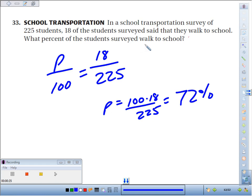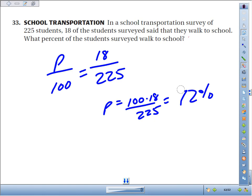What percent of students surveyed said they walked to school? 100 times 18 divided by 225? That seems too high. Only 18 surveyed said they walked, so my percentage shouldn't be that high. Let's try it again.